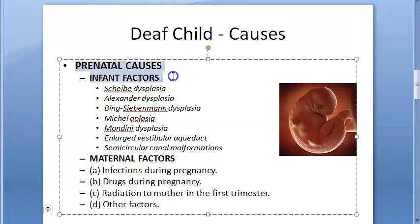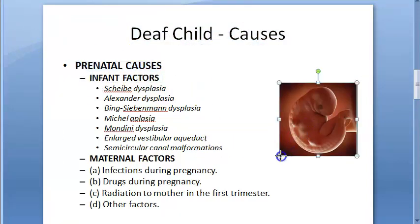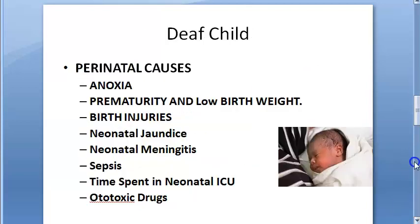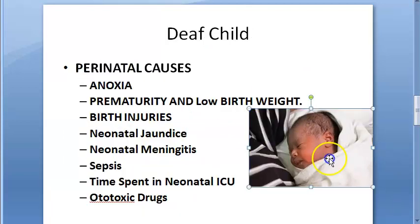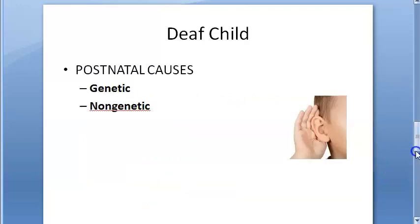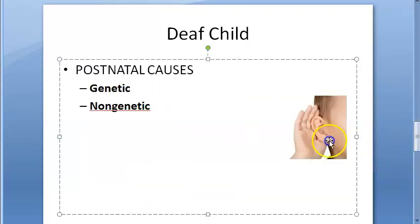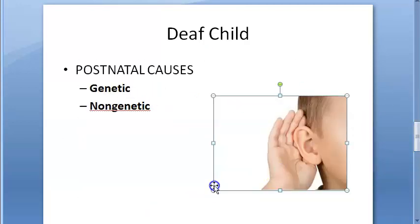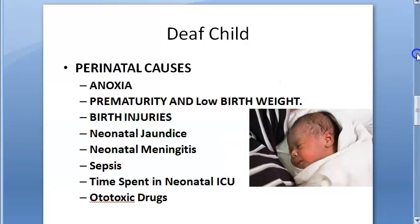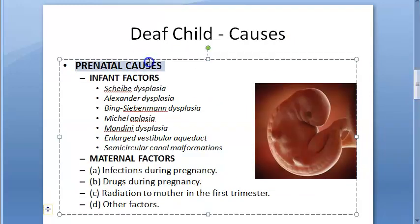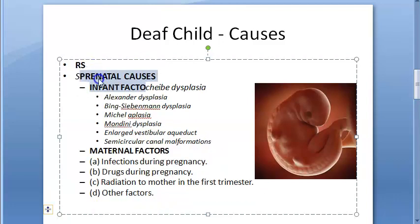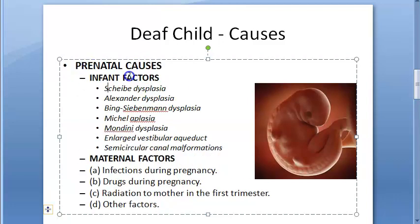There are three categories of causes: prenatal causes, perinatal causes (during birth), and postnatal causes (after birth). Under prenatal causes, there are two sub-categories: infant factors and maternal factors.